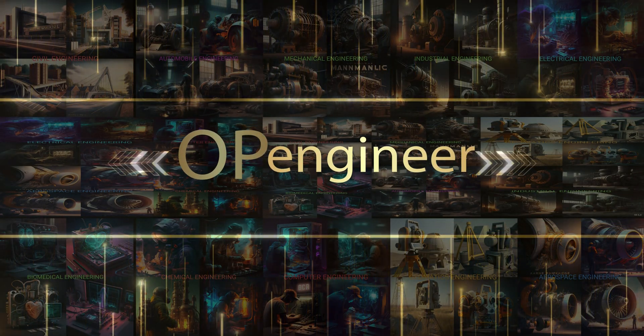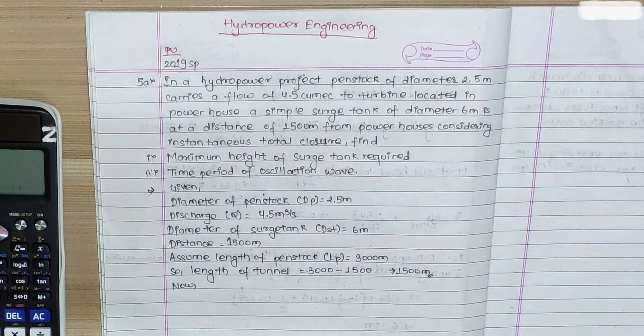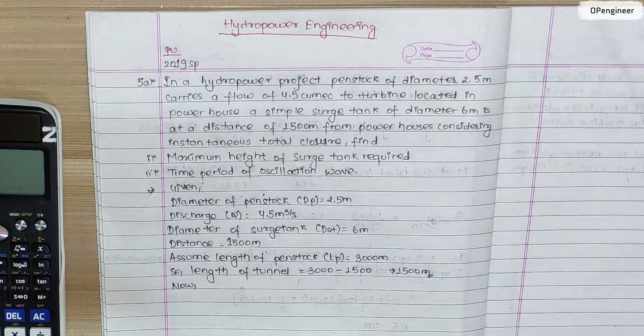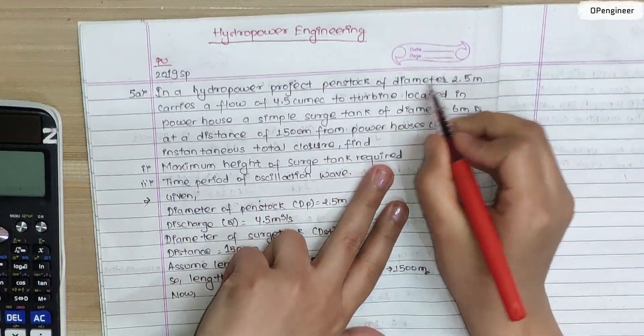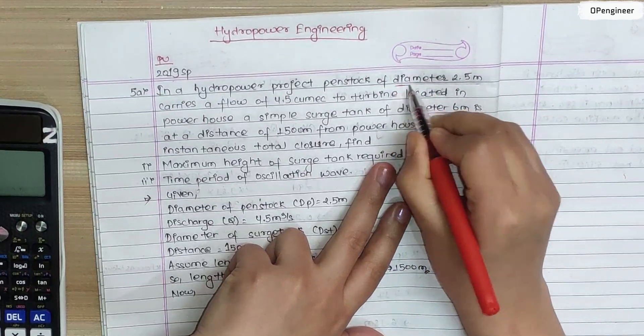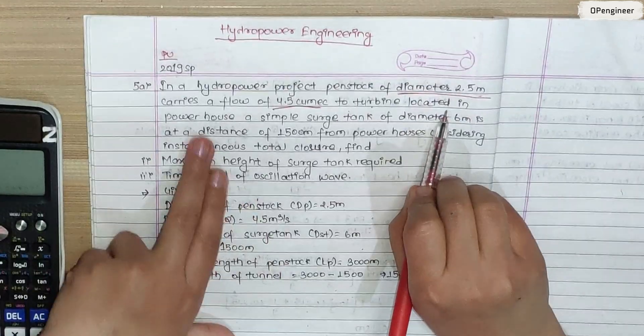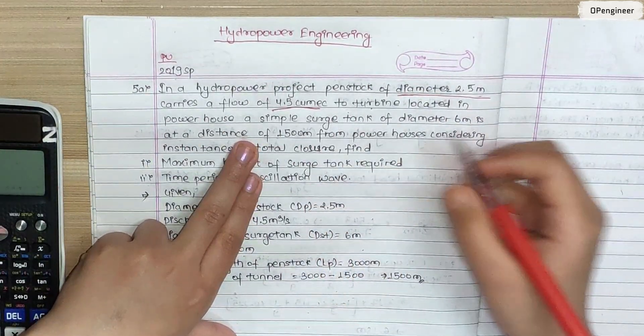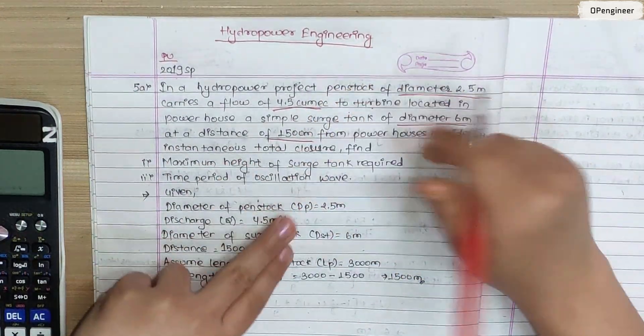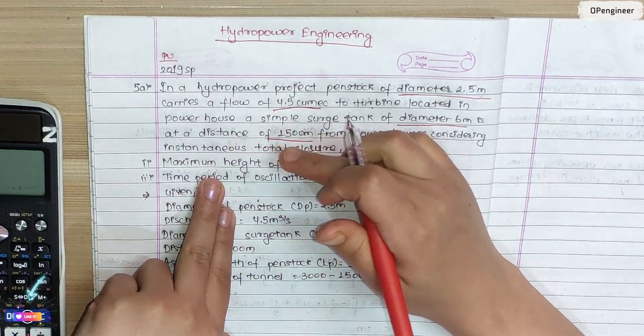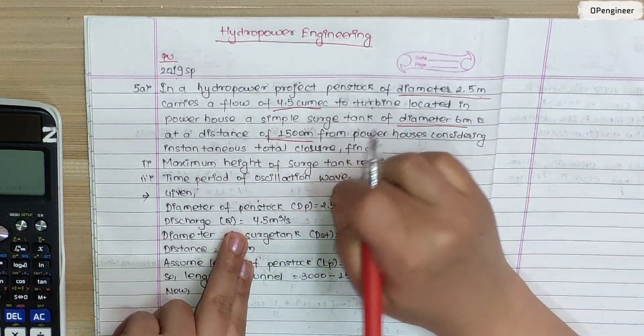How is Hydro Power Engineering 2019 Spring? Today we are going to talk about Hydro Power Engineering 2019 Spring. We are going to talk about Hydro Power Project, considering instantaneous total closure, find maximum height of surge tank and time period of oscillation.